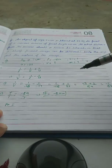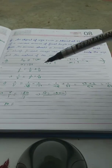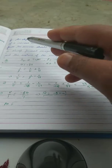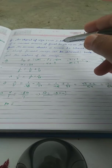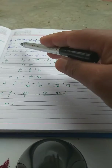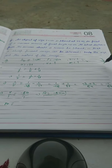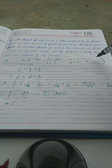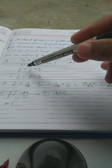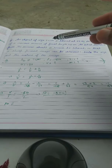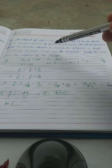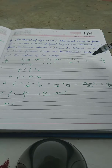This is the next question. An object of size 7.0 centimeter is placed 27 centimeter in front of a concave mirror, so u is minus 27. The height of the object is 7 centimeter. The focal length of the concave mirror is 18 centimeter.